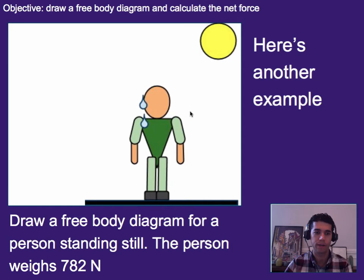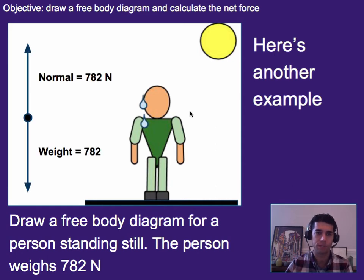Alright, welcome back. And in this case, the free body diagram would look like this. So we have the normal force of 782 newtons. That's the force from the ground. And then we have the force of their weight. That is 782 newtons. I forgot to include the newtons there. Please forgive me for that. And that's it. So those would be the two forces.